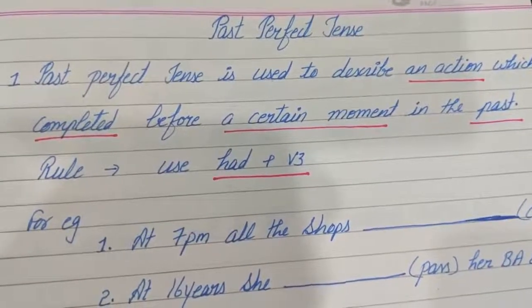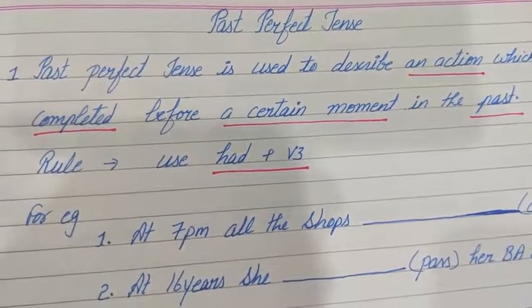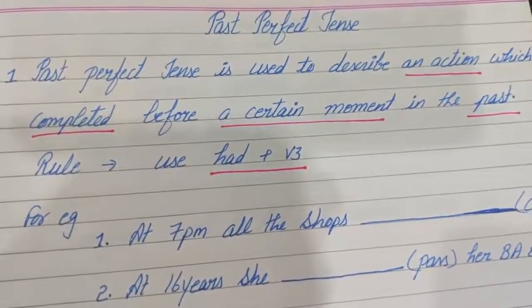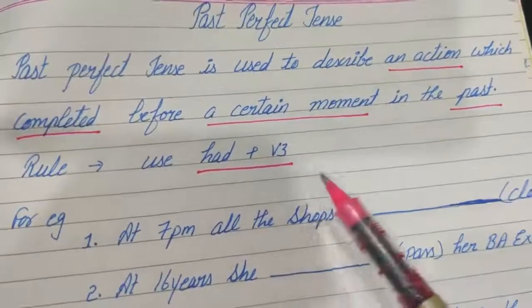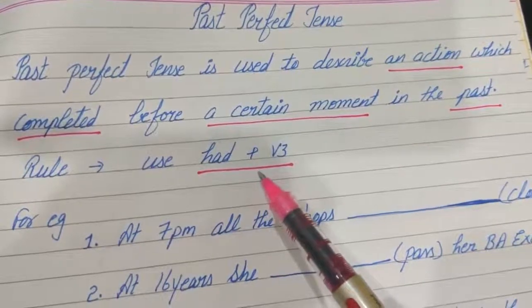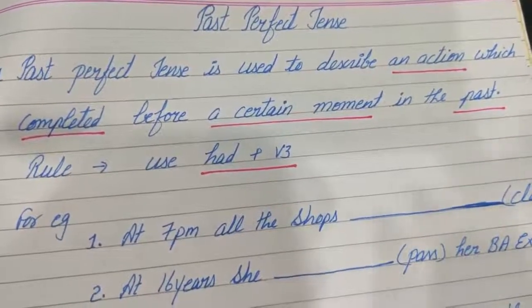And what is the rule of past perfect tense? We will use had plus V3. Let's see some examples now.